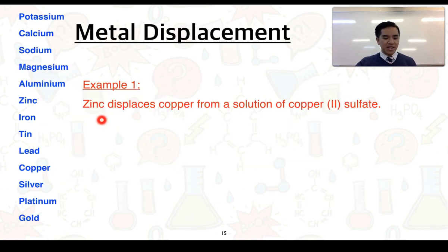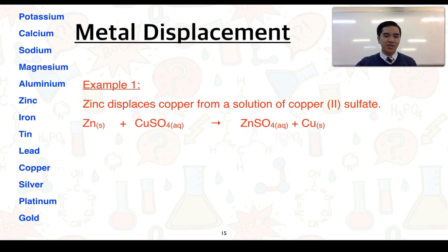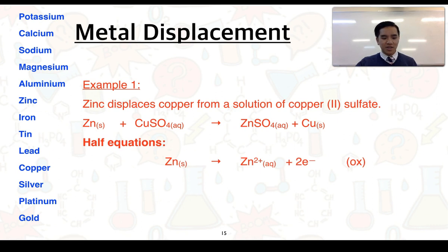For one example, zinc metal displaces copper from a solution of copper sulphate. We can see that zinc is higher up in the activity series and copper is lower, so zinc being more active than copper means zinc can displace copper ions from solution. The equation is: zinc plus copper sulphate solution produces zinc sulphate solution and copper metal. We can break this up into half equations. The first is zinc metal forming zinc ions in solution — to do that, it becomes oxidised and loses two electrons. This represents oxidation.